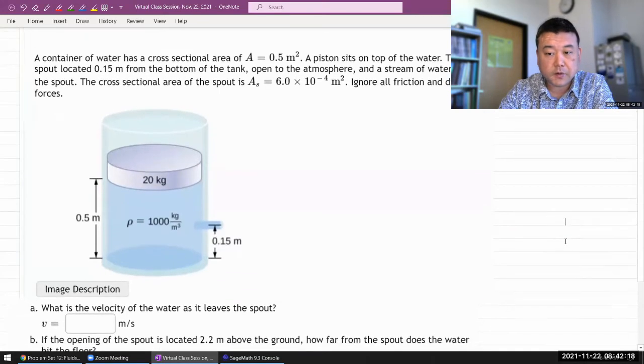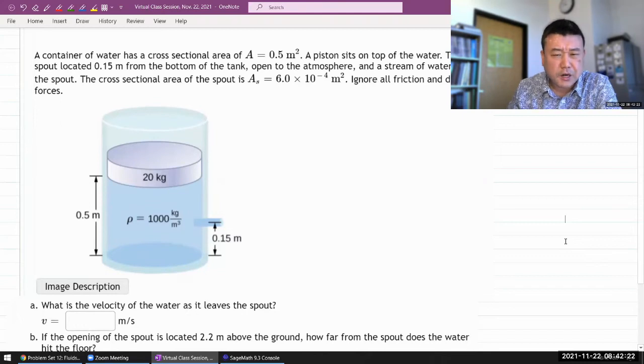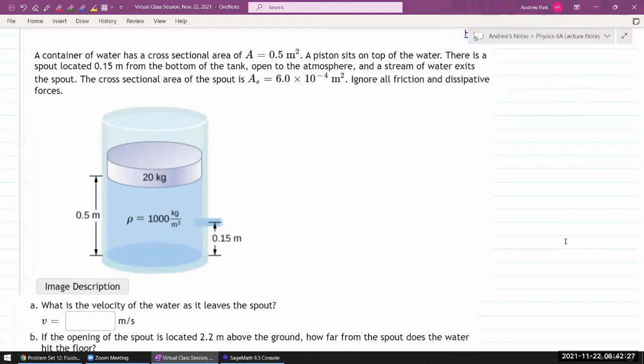Okay, so this is what the question says. A container of water has some cross-sectional area. A piston sits on top of the water. There's a spot of... why did it get also complicated all of a sudden. Let me label some of the quantities here. So we are given some big height H and some small height h. And we have some mass m. And I think it's going to matter that this is some area of 0.5 meters squared.